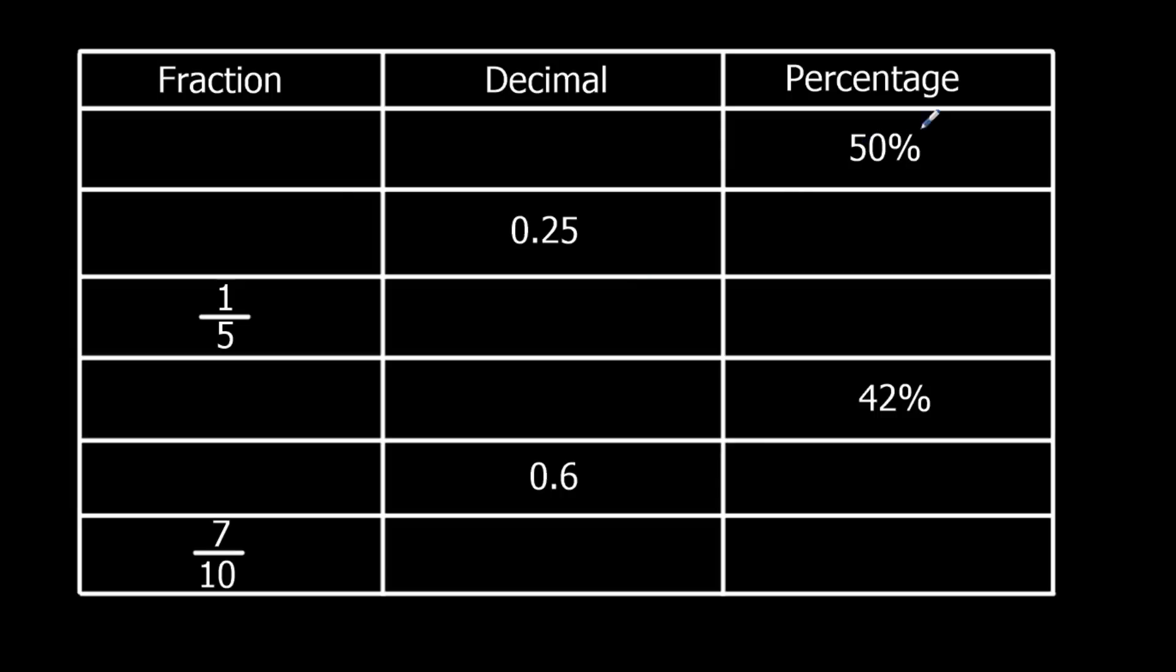We'll start with 50% here. Change the percentage to a decimal, divide by 100. So 50 divided by 10 is 5, 5 divided by 10 is 0.5. A fraction, we write it over 100, so 50 over 100. And then we simplify. Well, they're both in the 50 times table. It's 1 half.